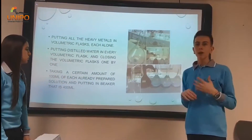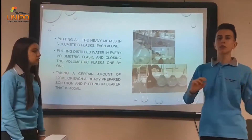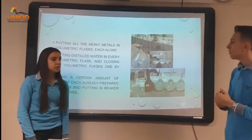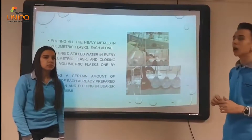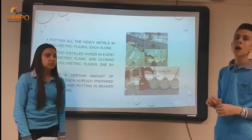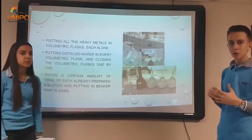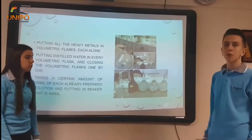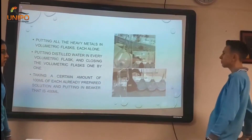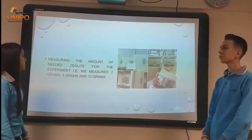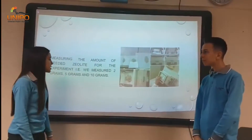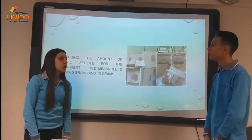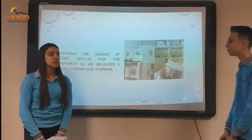We finished making the solution of heavy metals in distilled water in the volumetric flasks. Then we waited some time and took 100 milliliters of the already prepared heavy metals solution and put that into a larger beaker of less than 400 milliliters. After that, the zeolite part comes — we measured the zeolite to 5 to 10 grams and prepared it for further use.